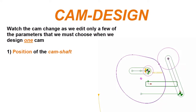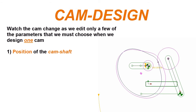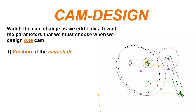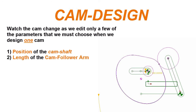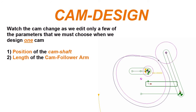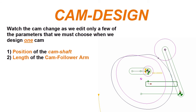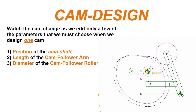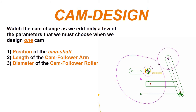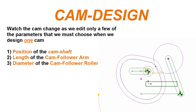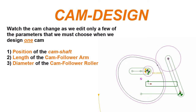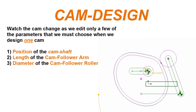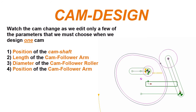Let's watch the shape of the cam change as we change some parameters. Here, we are moving the camshaft up and down. Now we are changing the length of the swinging arm cam follower. And now we are changing the diameter of the cam roller. And now we are changing the starting angle of the cam follower.